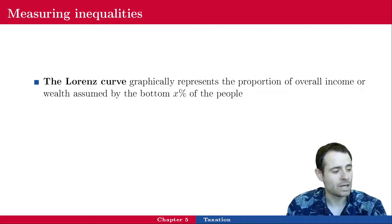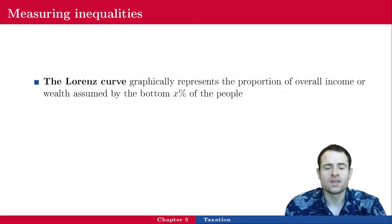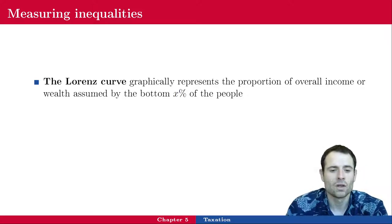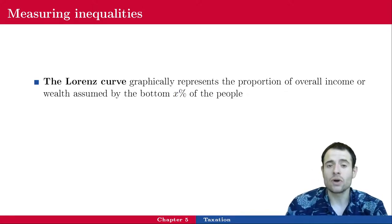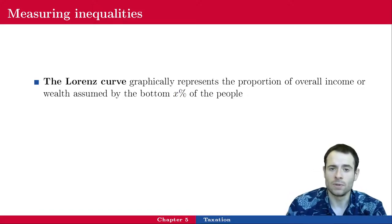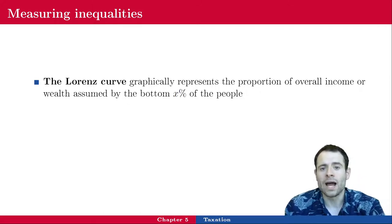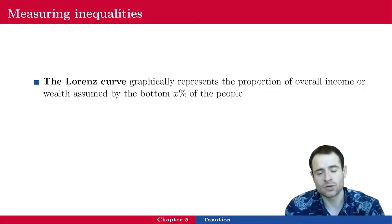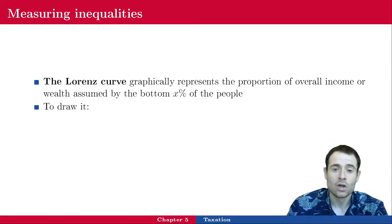Let's get into measuring inequalities. We have a bunch of different tools and measures available — none of them is perfect, which is why we look at all of them to see if patterns emerge. The main one is called the Lorenz curve. It is a graph that represents the proportion of overall income or wealth held by the bottom x percent of the people — the same way we looked at wage inequalities, we look at the share of total income the x percent poorest people earn.